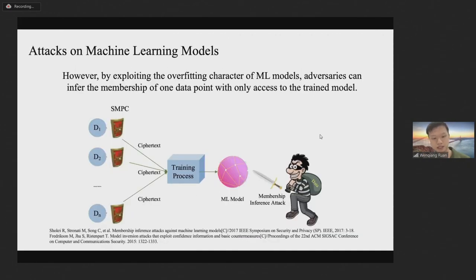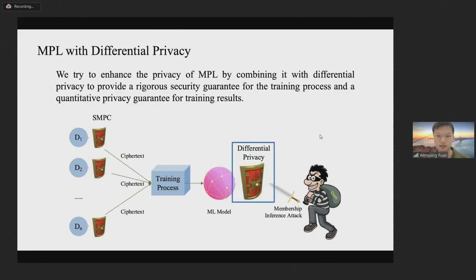However, by exploring the overfitting character of ML models, adversaries can infer the membership of one data point with only access to the trained model. Such attacks on machine learning models are missed by the security model of secure multi-party computation and cannot be defended by existing MPL frameworks. In this paper, we try to enhance the privacy of MPL by combining it with differential privacy. We aim to provide a rigorous security guarantee for the training process and a quantitative privacy guarantee for training results at the same time, such that we can prevent attackers from inferring the membership of one data point for models trained by MPL.